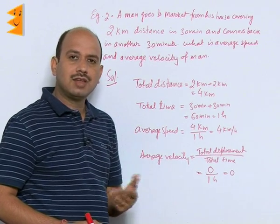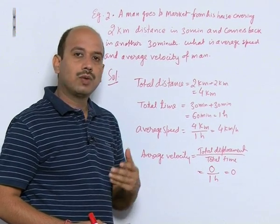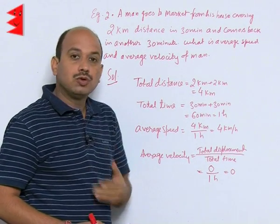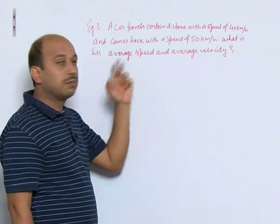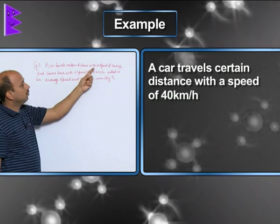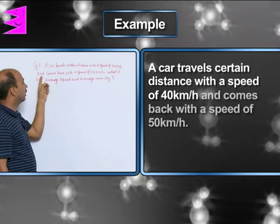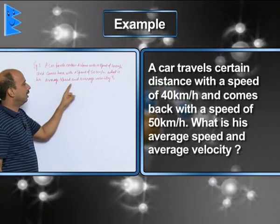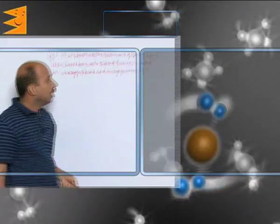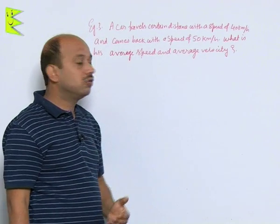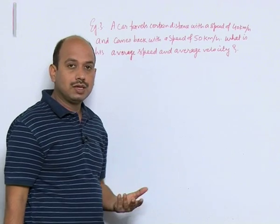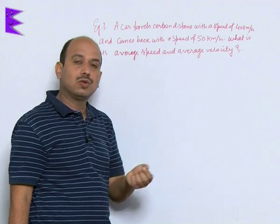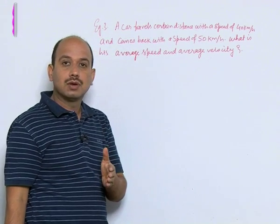See the next example, which is slightly more difficult. A car travels a certain distance at a speed of 40 kilometers per hour and comes back at 50 kilometers per hour. What is the average speed and average velocity? In this question, neither the distance nor the time is given, so you must calculate both total distance and total time.